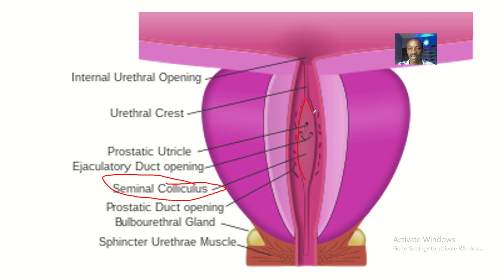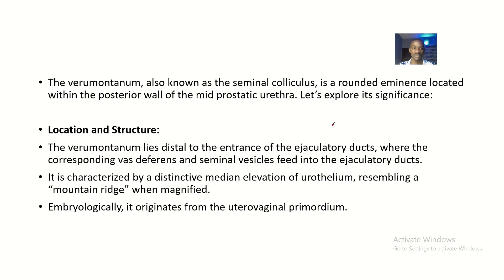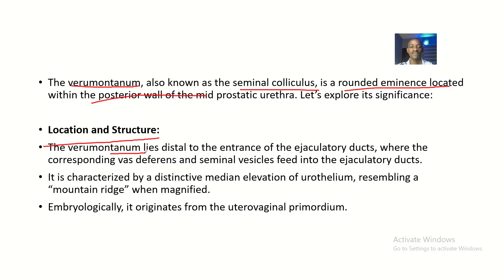This area here is the seminal colliculus, located within the prostate gland. We'll be talking about the contents of this area. The verumontanum, also known as the seminal colliculus, is a rounded eminence located within the posterior wall of the mid-prostatic urethra.